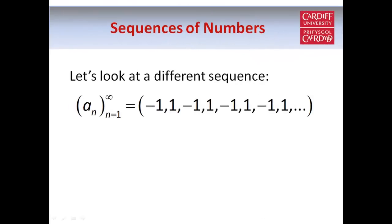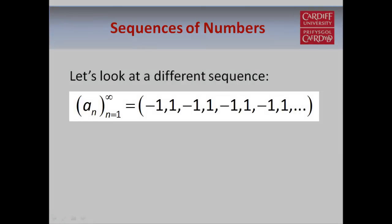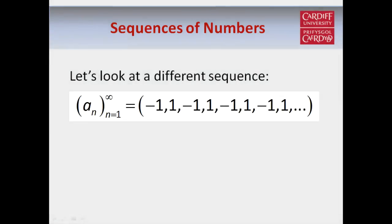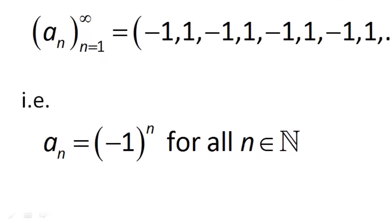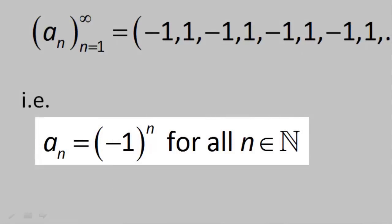We say a sequence is bounded if it's bounded above and bounded below. So a_n equals 2n is not bounded, because it's only bounded below and not bounded above. Now let's look at a different sequence that alternates between two values: minus 1, 1, minus 1, 1, etc. The general rule is a_n equals minus 1 to the power n for all natural numbers n.